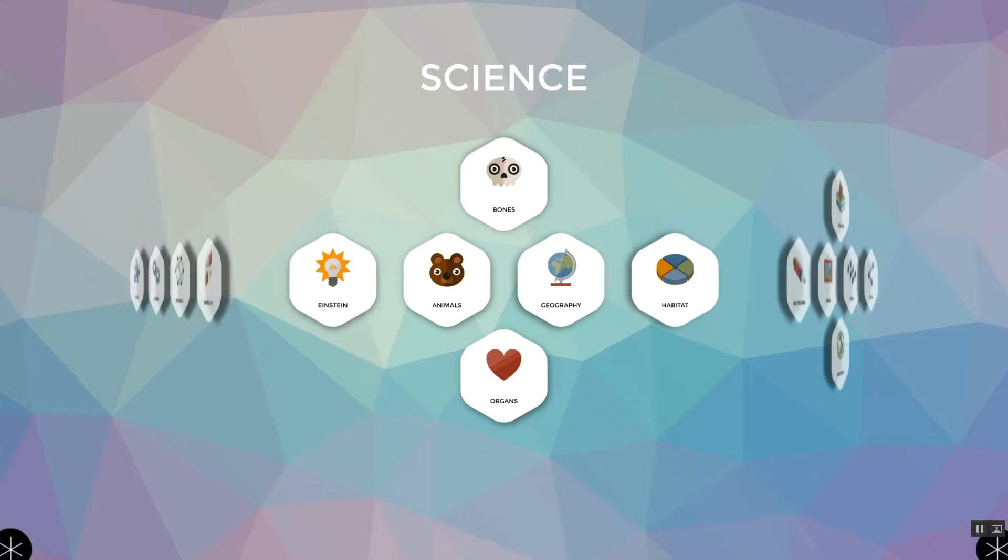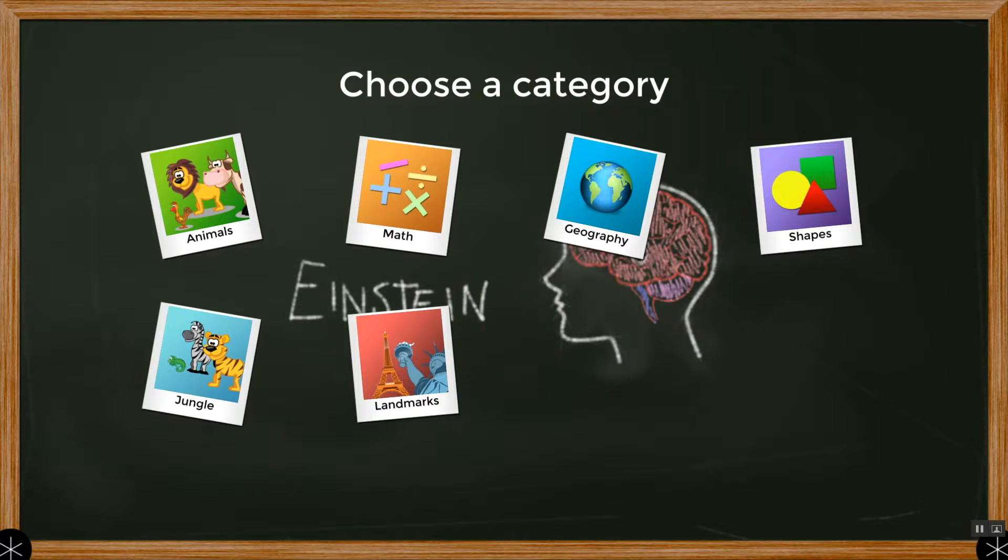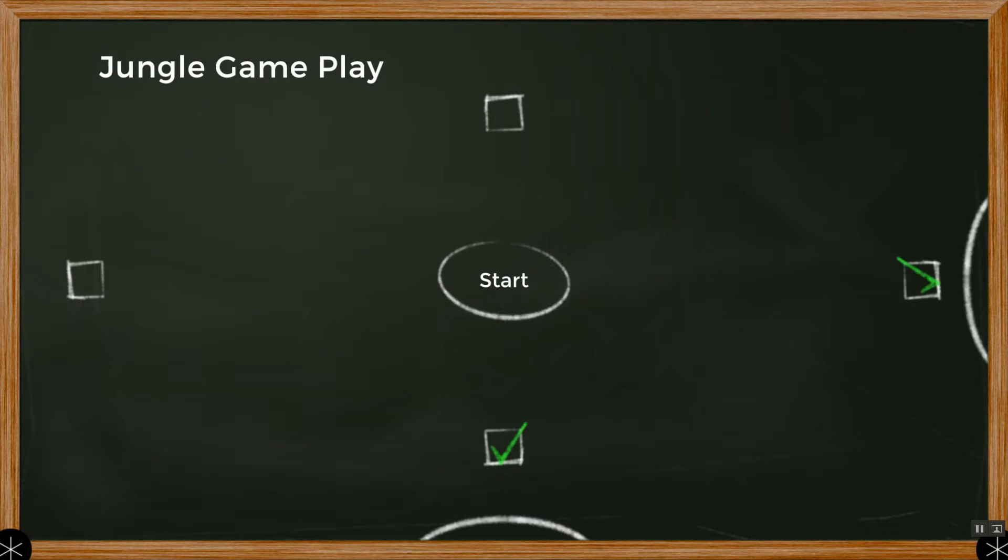Tap the Einstein icon in the Science category menu and it will lead you to a selection screen where you can choose from a range of categories. Here, I'll select Jungle and then press Start.